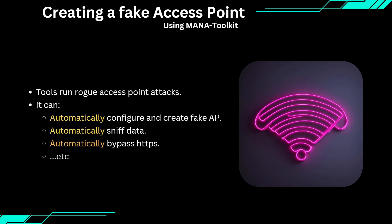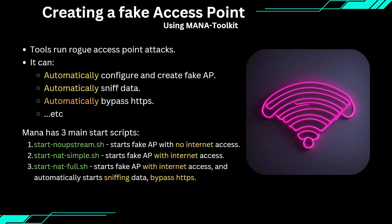The tool we will use is called the MANA Toolkit. This is a powerful suite of tools that allows us to automatically create a fake access point, sniff traffic, and even bypass HTTPS in some cases. It has three main scripts to choose from. First, start-noupstream — this creates a fake access point without internet access, which is not very useful for our purposes. Second, start-net-simple — this sets up a fake access point with internet access. Third, start-net-full — this also provides internet access but tries to automatically sniff traffic, which often fails. I recommend starting with start-net-simple and then launching another terminal to run BetterCap for sniffing data and bypassing HTTPS.